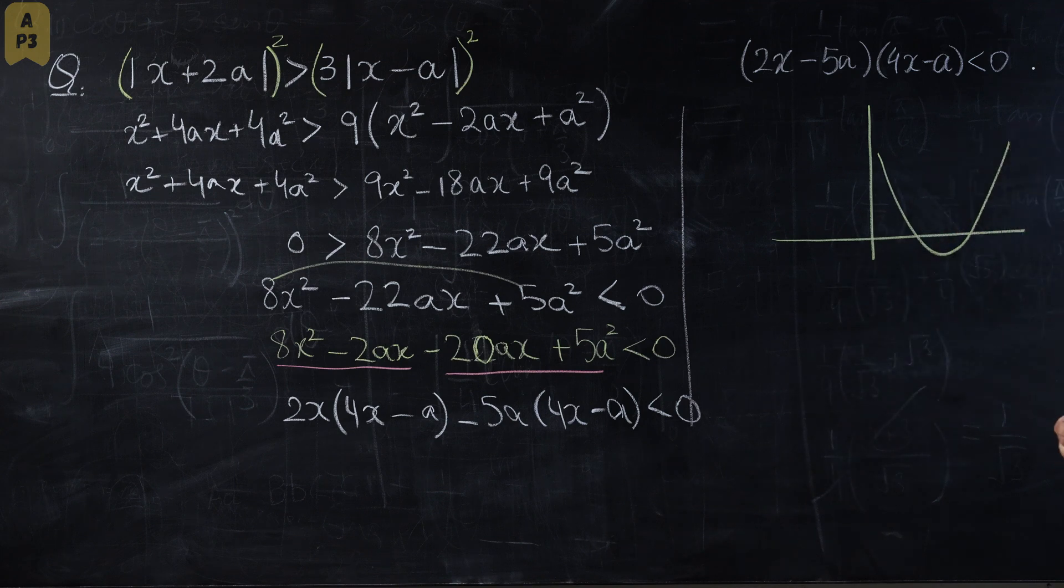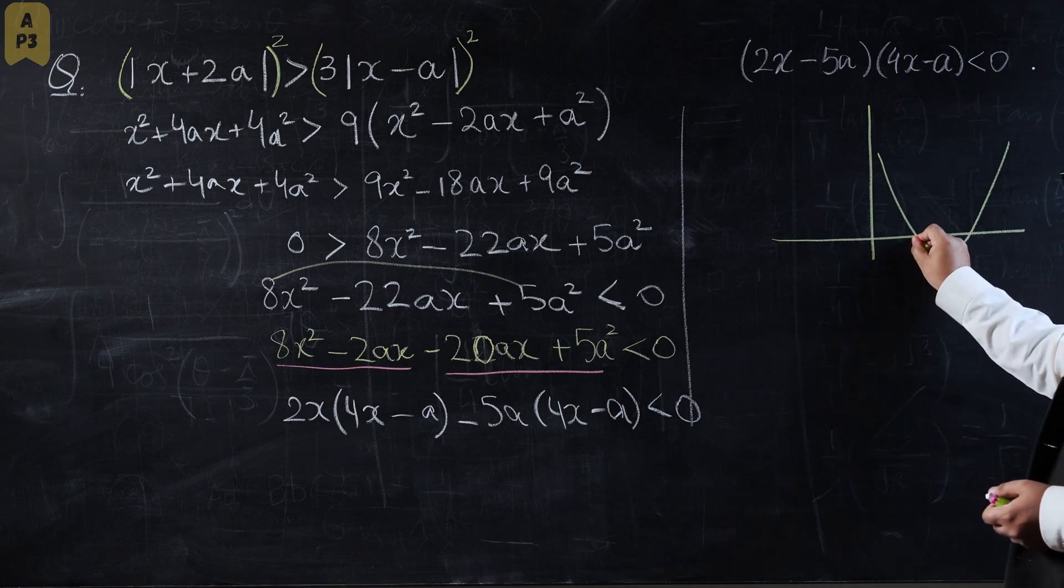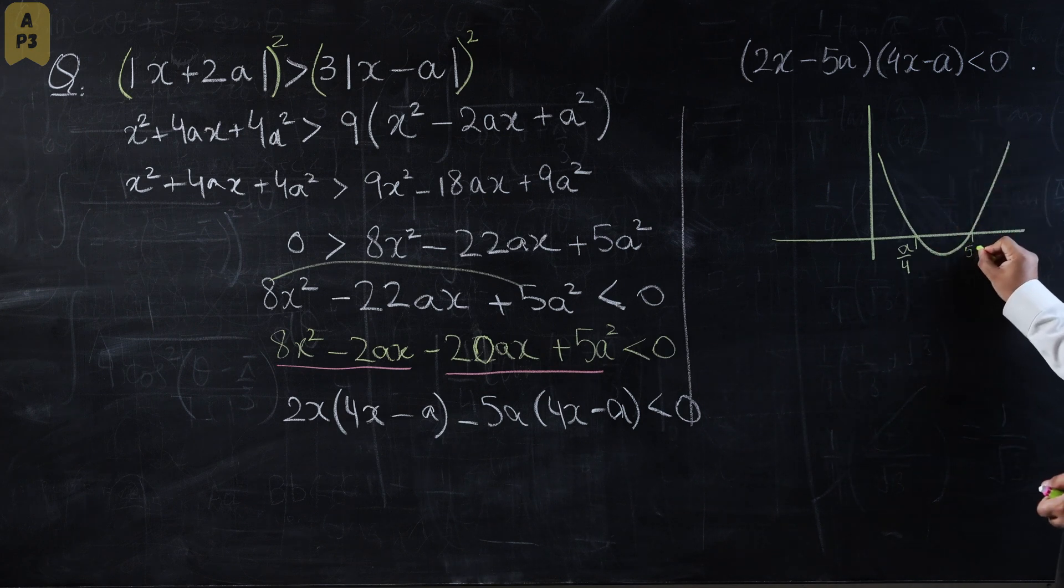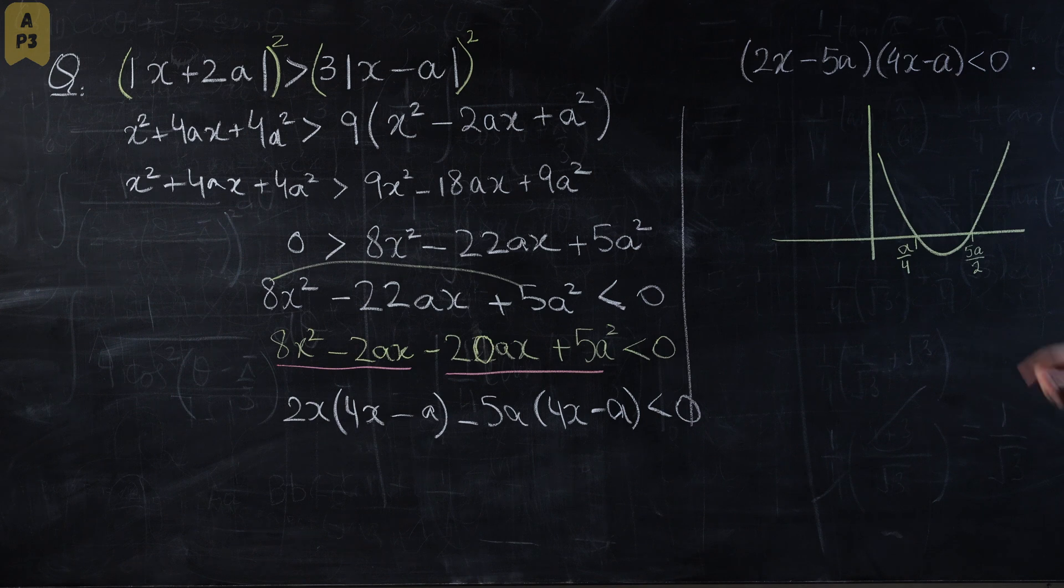For this I will have two intercepts: the first one is a over 4, and the second one is 5a over 2.